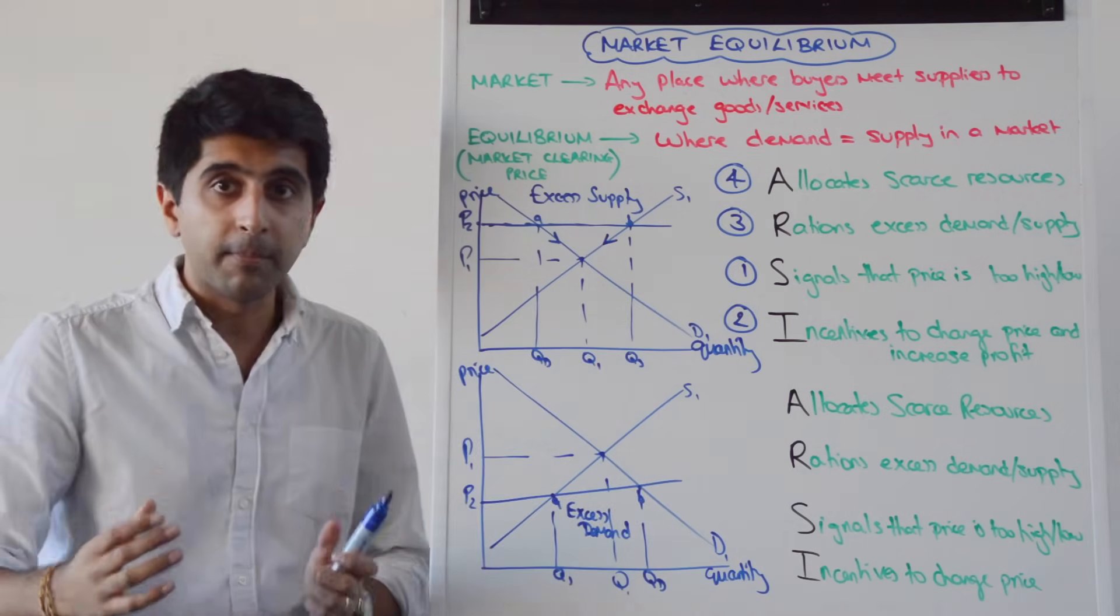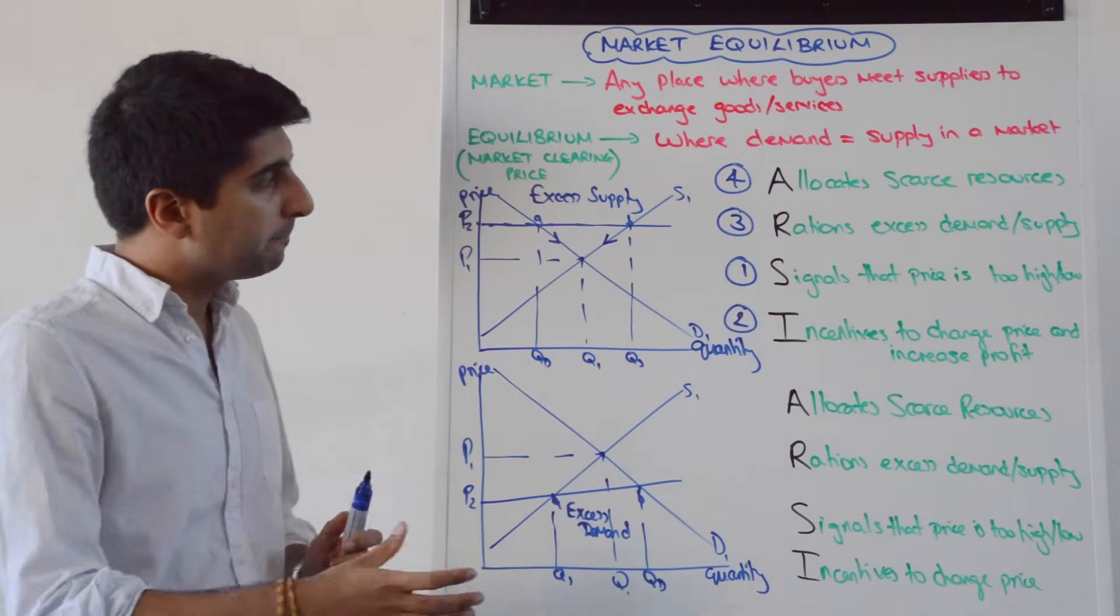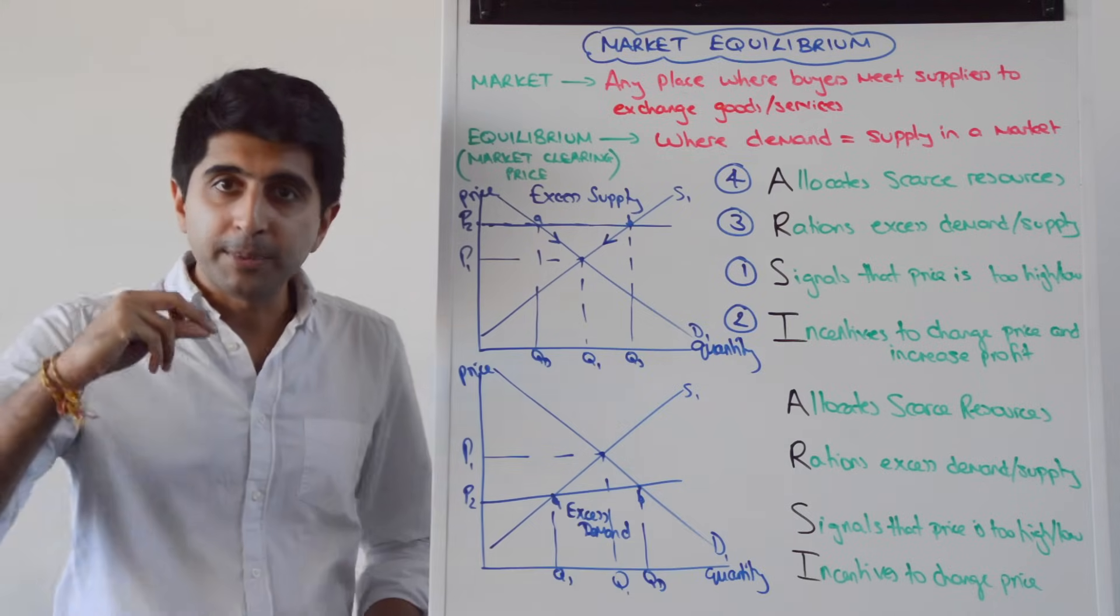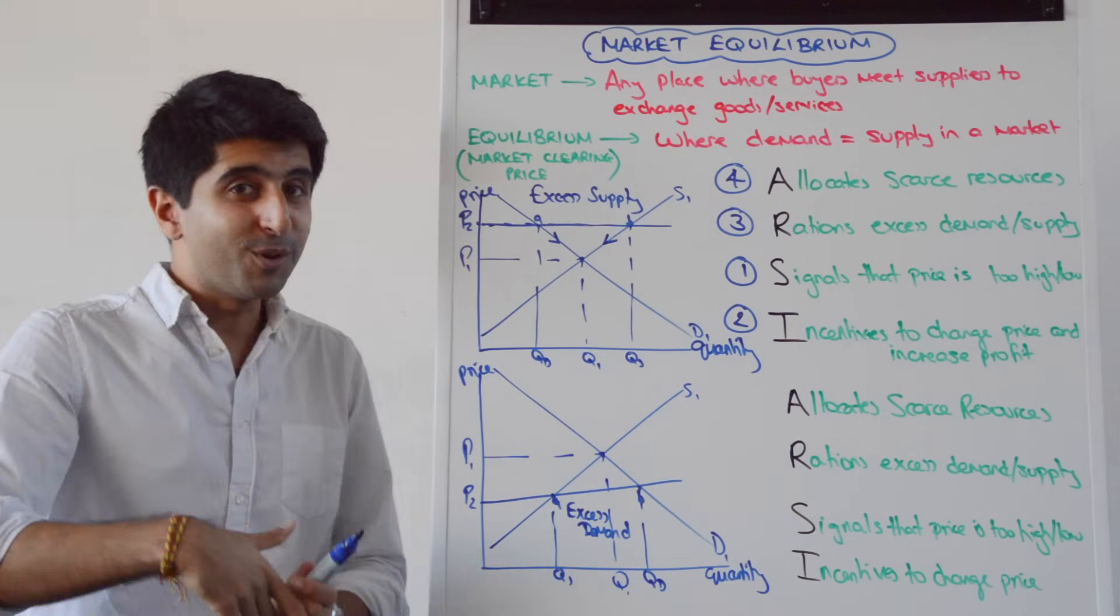But basically, where we're at equilibrium, that is a perfect allocation of scarce resources. So in a free market, any time there is excess supply at the prices above equilibrium, that will be taken away through the functions of the price mechanism, through RARC.